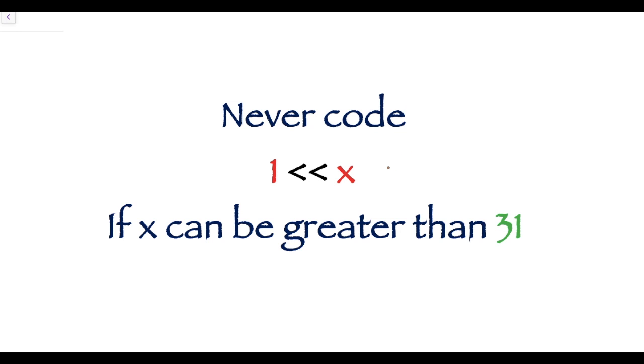Third is never code this if x can be greater than 31. This code will show undefined behavior. To use this, we have to first cast 1 to long long, like this.